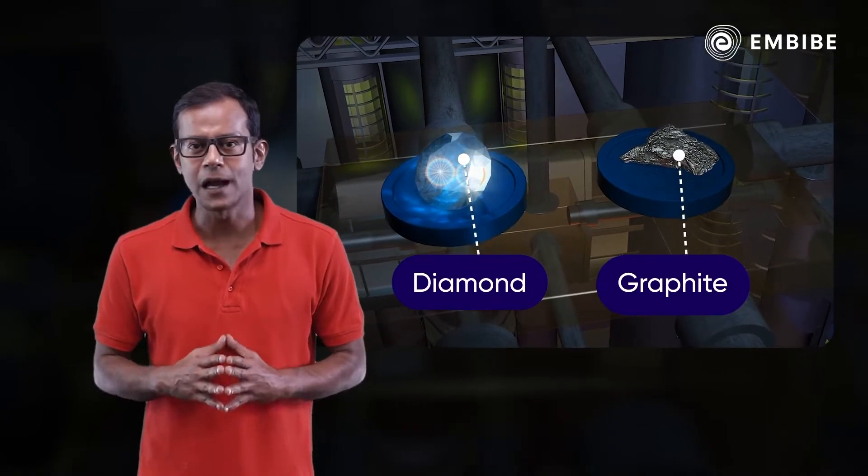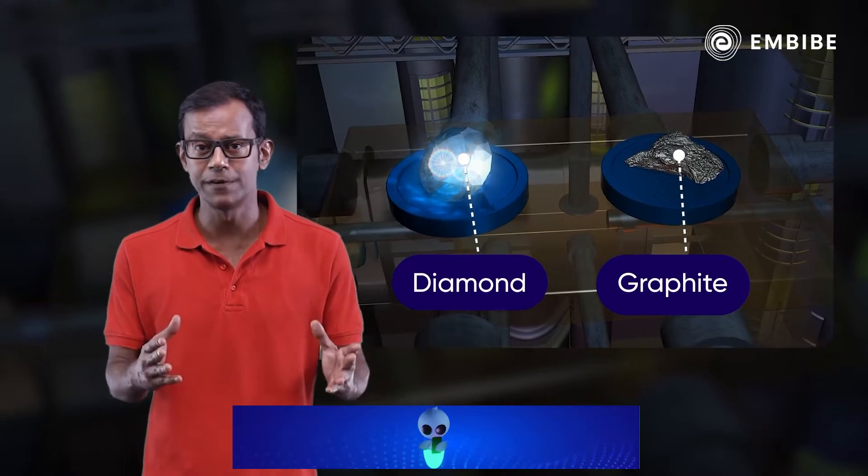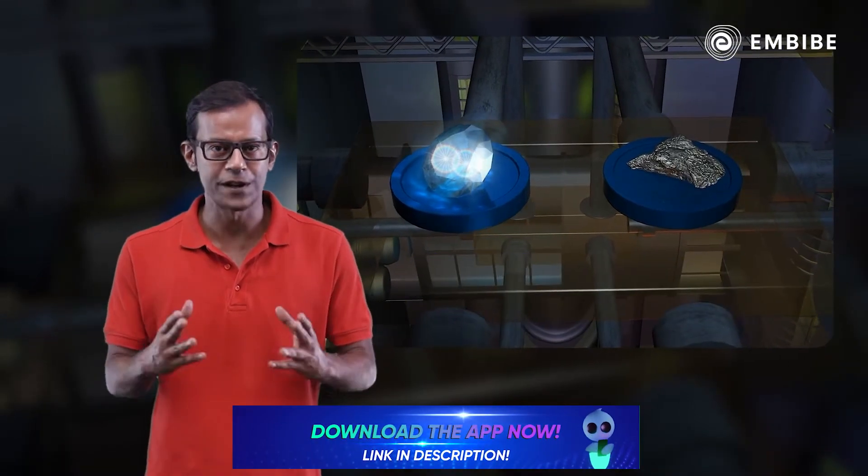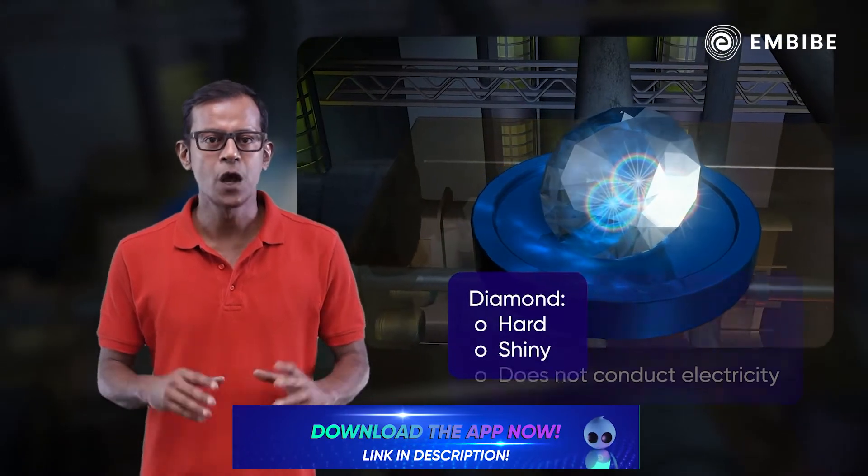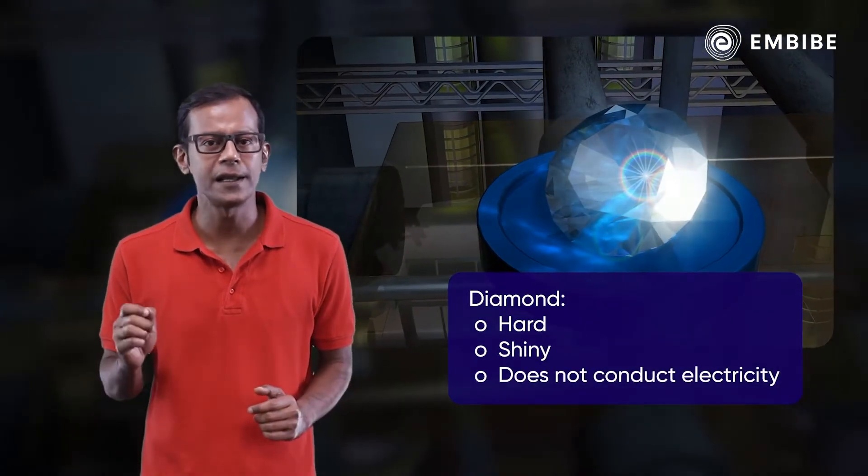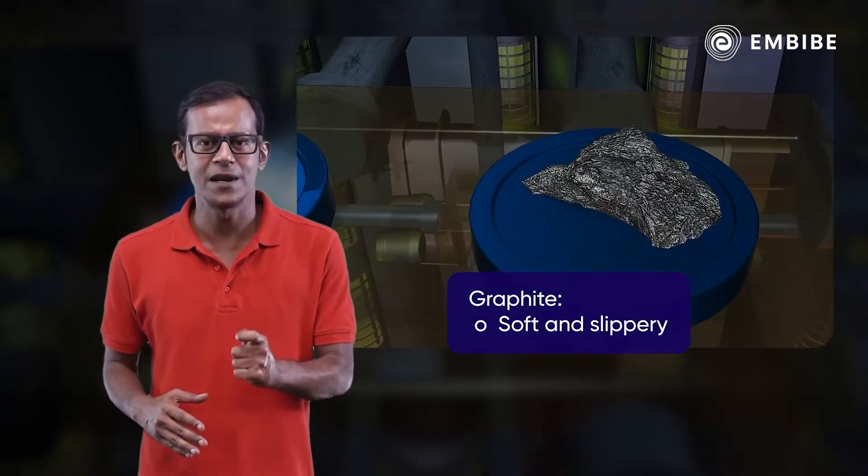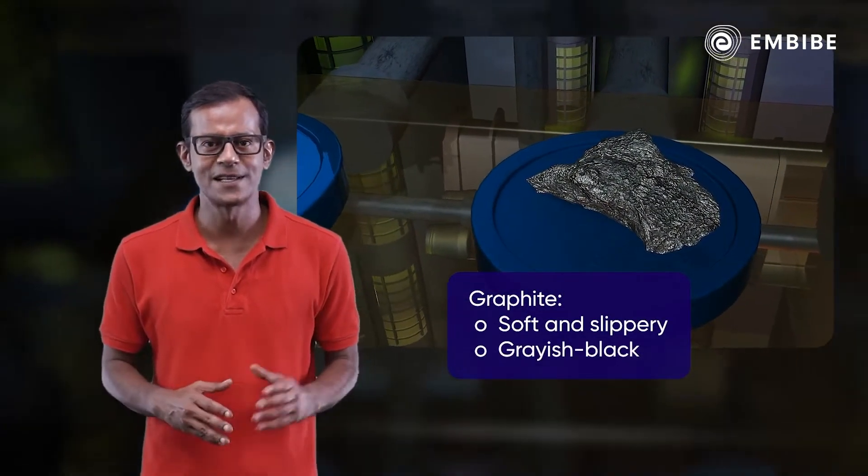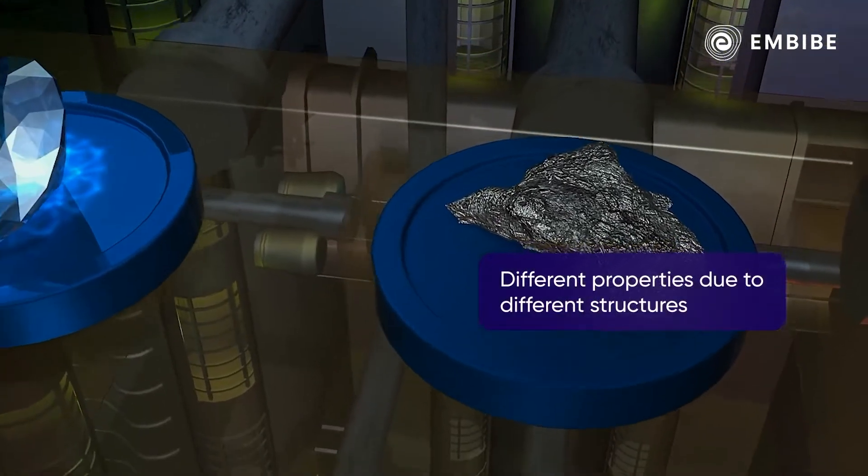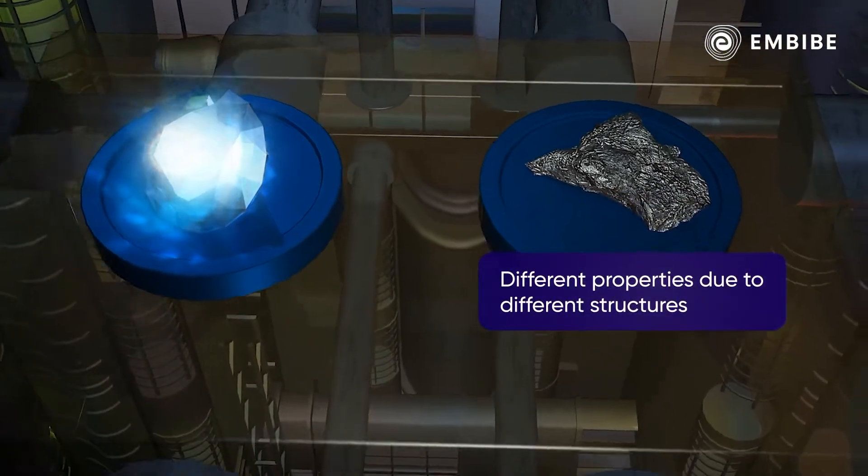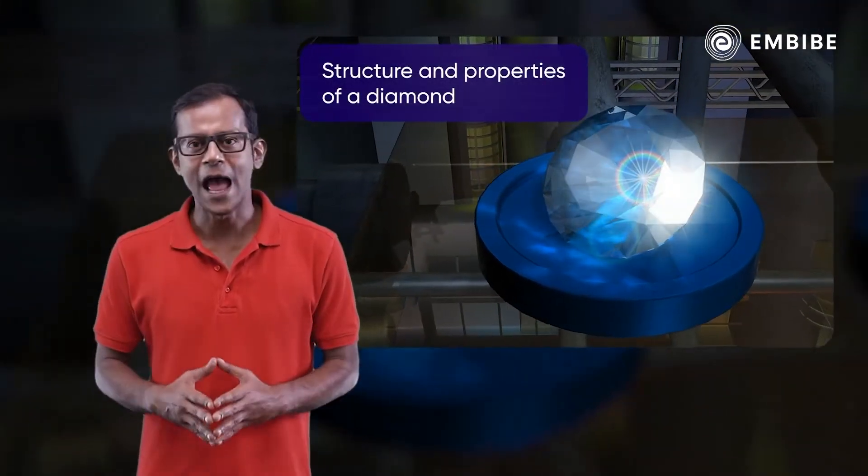Diamond and graphite are two naturally occurring allotropes of carbon. These allotropes differ in many properties. For example, diamond is a hard and shiny substance which does not conduct electricity. On the other hand, graphite is a soft and slippery black-colored substance which conducts electricity. The difference in their properties arises due to the different structures of these allotropes.